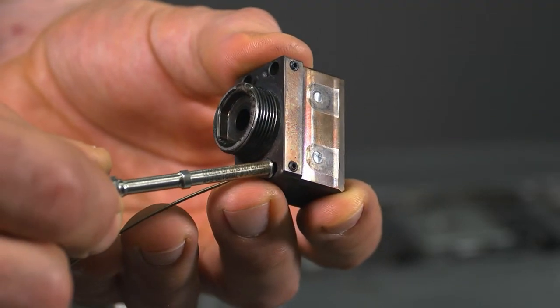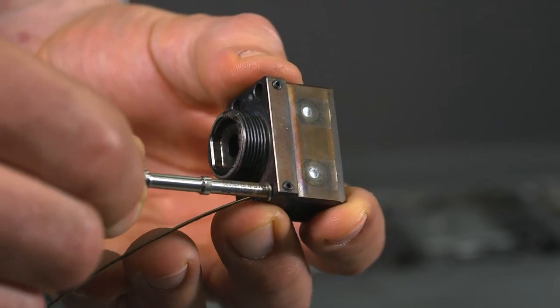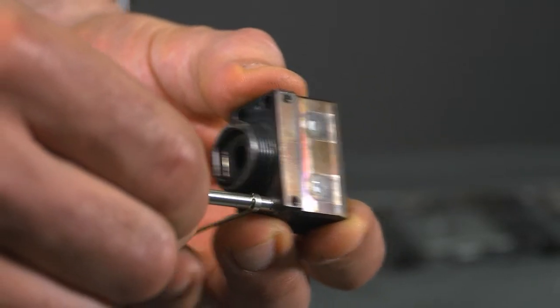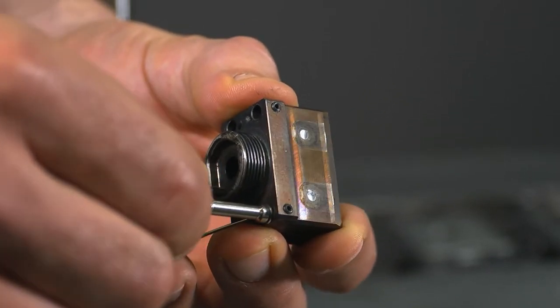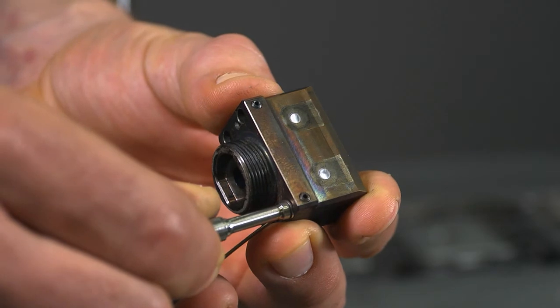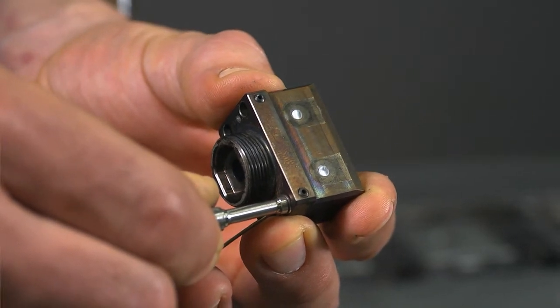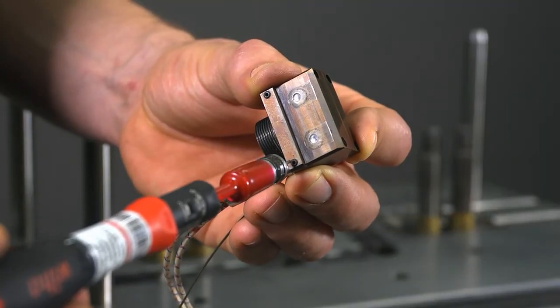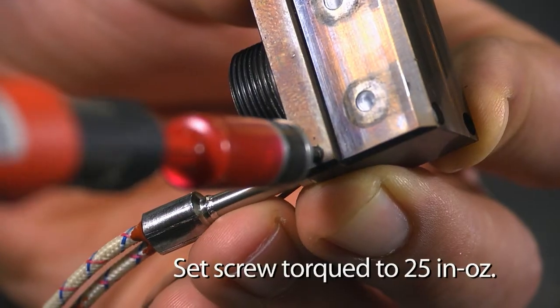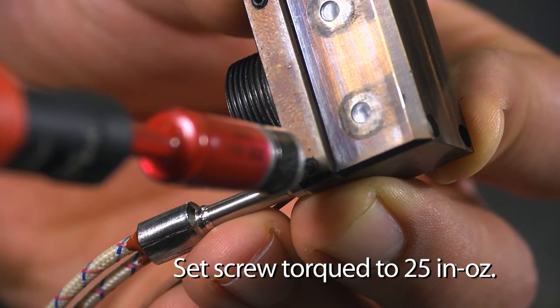Then, we will thread a cartridge heater through the eyelet in the TC tab and into the heater bore in the nozzle head. The heater should be inserted until the flange bottoms out on the TC tab. Once the flange has captured and loaded the TC tab, the set screw can be torqued to 25 inch ounces.